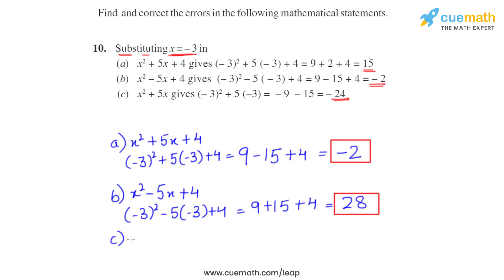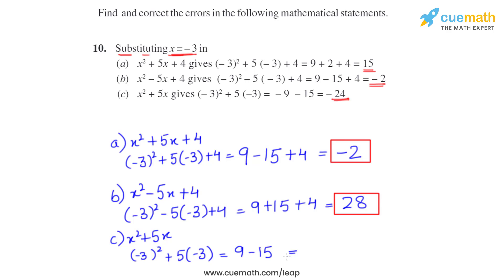For part c, x squared plus 5x, substituting x as minus 3: it becomes minus 3 whole square plus 5 into minus 3. Minus 3 whole square is 9, and 5 into minus 3 is minus 15. So the correct answer is 9 minus 15, which is minus 6, not minus 24.